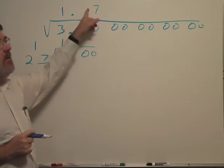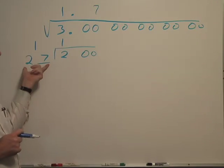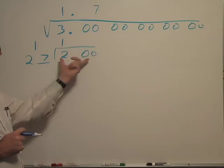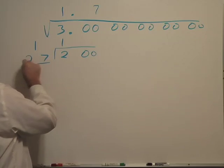Now it turns out 7 is the largest digit I can put up here so that 7 times this number 27 will be less than 200. So let's do that, 7 times 27 is 189.